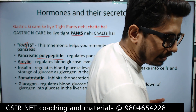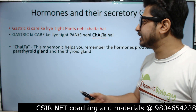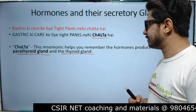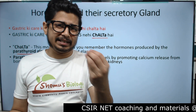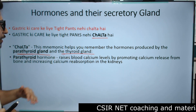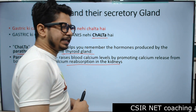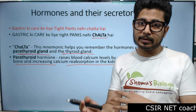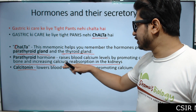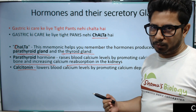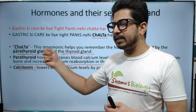The last part is chalta. These are the hormones secreted by the parathyroid gland and the thyroid gland. The parathyroid gland secretes parathyroid hormone — very simple and easy to remember. Its job is to raise the blood calcium level by promoting calcium release from bone and increasing calcium absorption in the kidneys. Then C for calcitonin — lowers the blood calcium level by promoting calcium deposition in the bone. Calcitonin's job is antagonistic to that of parathyroid hormone.